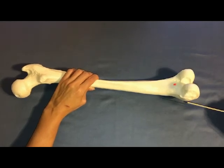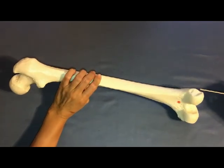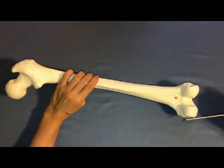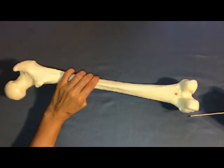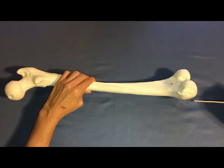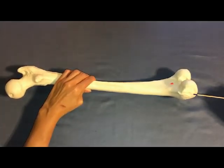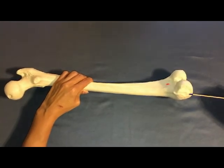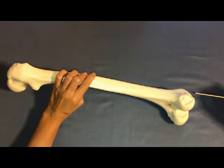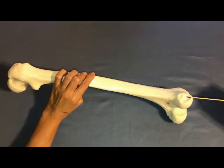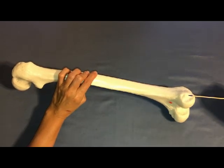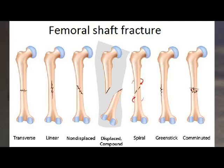The medial and the lateral epicondyles are small bony prominences on either condyle of the femur. The medial epicondyle of the femur is the attachment site of the tibial collateral ligament, and the lateral epicondyle is the attachment site of the fibular collateral ligament.